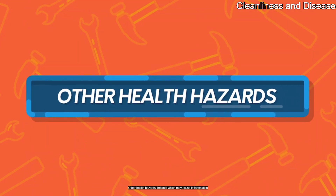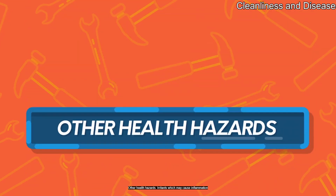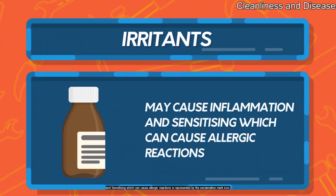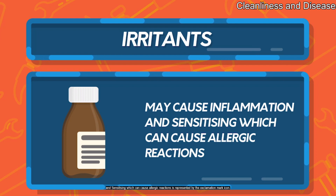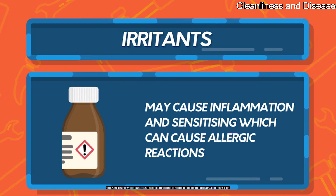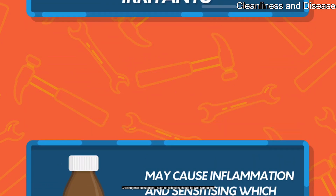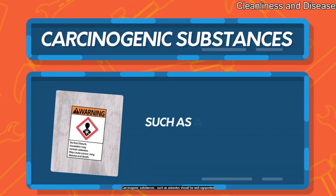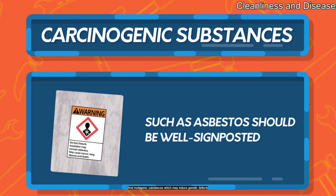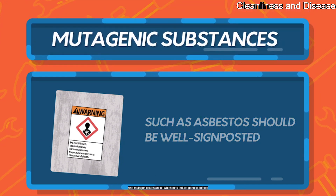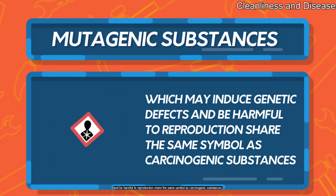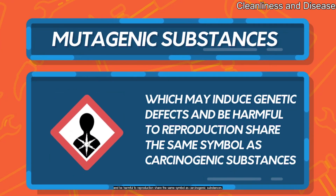Other health hazards include irritants, which may cause inflammation, and sensitisers, which can cause allergic reactions — both represented by the exclamation mark icon. Carcinogenic substances, such as asbestos, should be well signposted. Mutagenic substances, which may induce genetic defects and be harmful to reproduction, share the same symbol as carcinogenic substances.